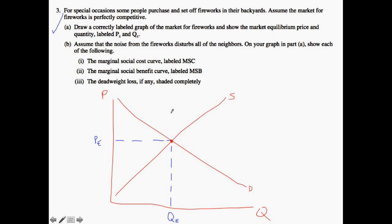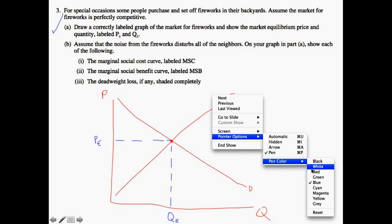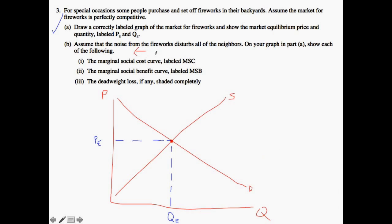Now let's look at part B. Assume that the noise from the fireworks disturbs all the neighbors. On your graph in part A, show each of the following: marginal social cost, marginal social benefit, and deadweight loss. This is asking about the case of a negative externality, because the noise is incurring an additional cost to society. If it were a positive externality, it would be something good — but disturbing neighbors means something bad. So this is a negative externality.